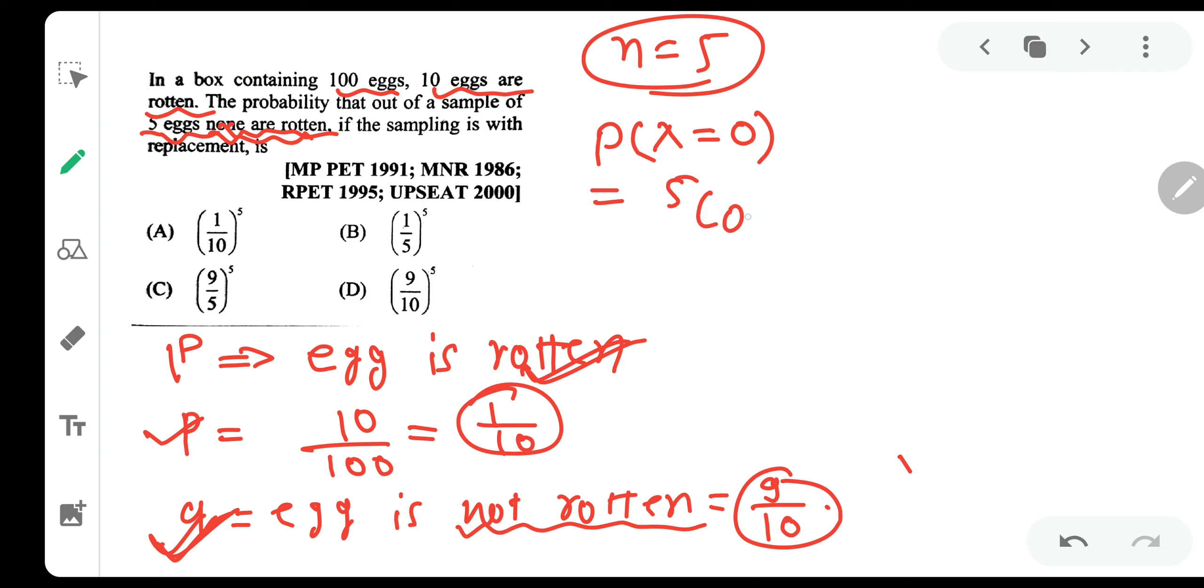So what will it be? 5 C 0, P raised to 0 because success is 0 number of times, none is rotten, and Q raised to 5. 5 C 0 is 1, P raised to 0 is 1, and Q is 9 by 10, 9 by 10 raised to 5. So the answer will be 9 by 10, the whole raised to 5.